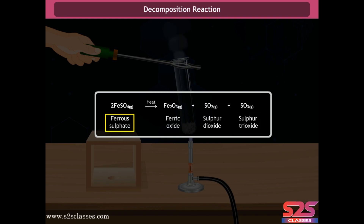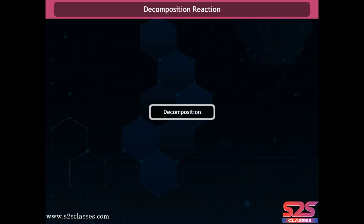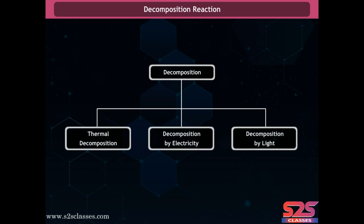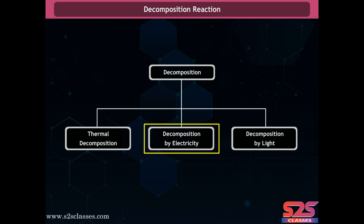Ferrous sulfate breaks down to form three new substances, making it an example of a decomposition reaction. Decomposition reactions can be classified into three types depending on the source of energy: decomposition by heat (thermal decomposition), decomposition by electricity (electrolysis), and decomposition by light (photolysis).